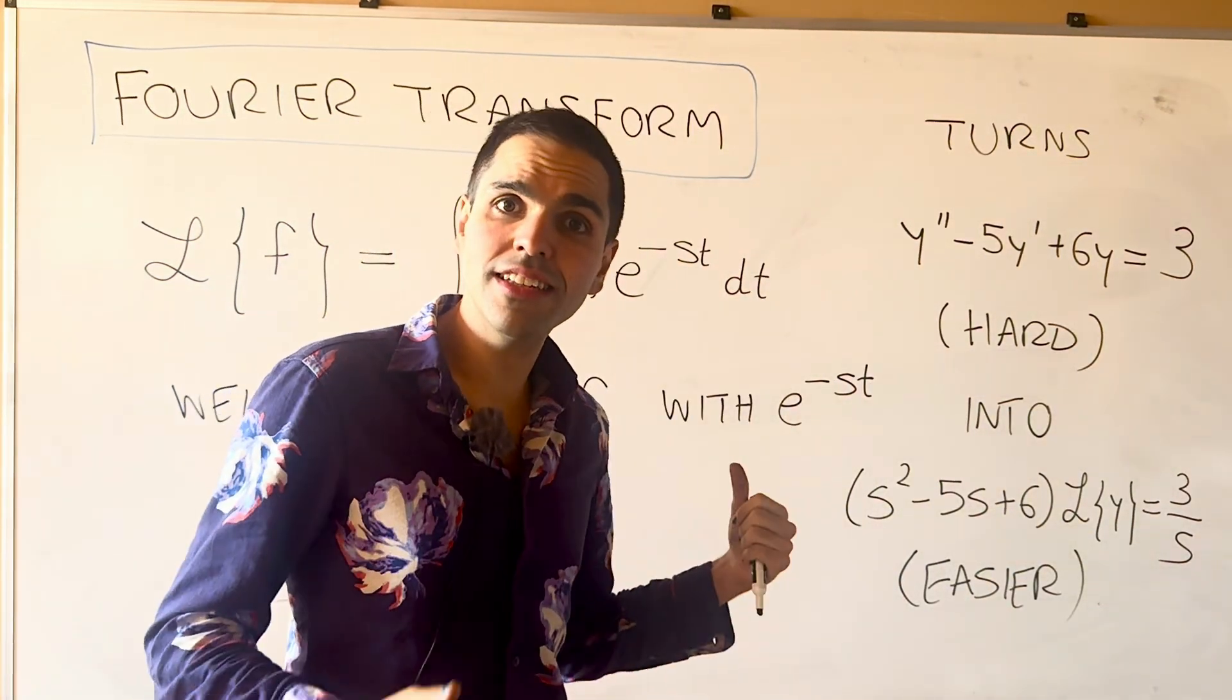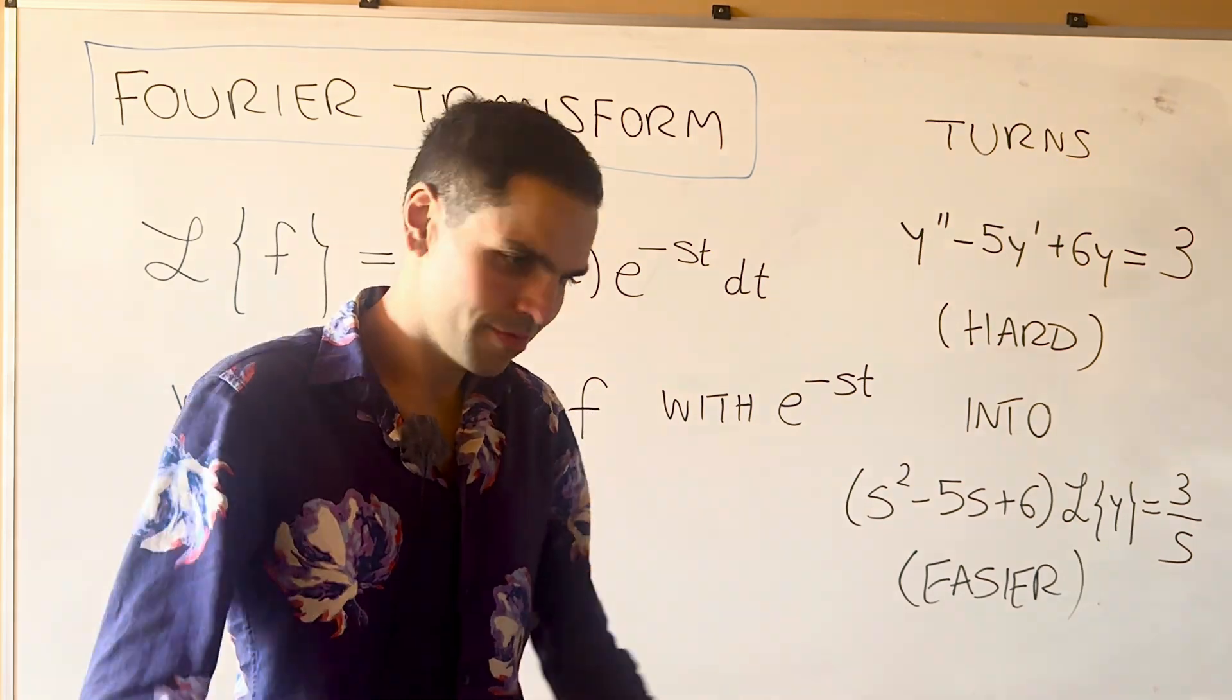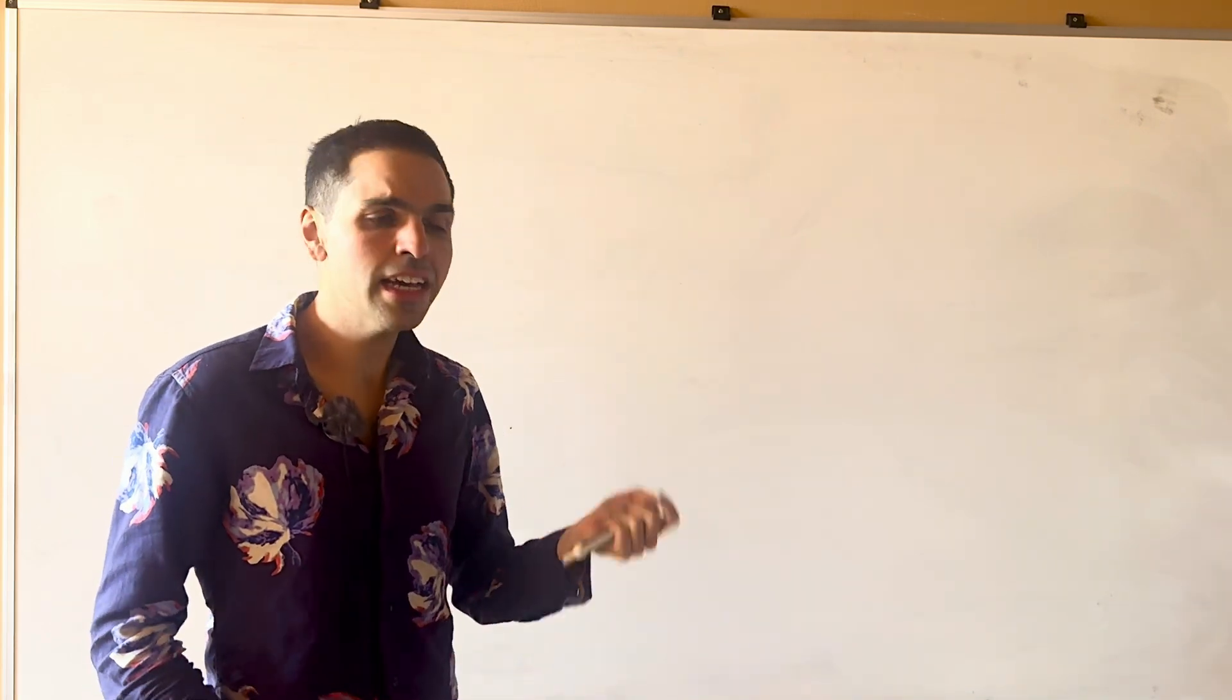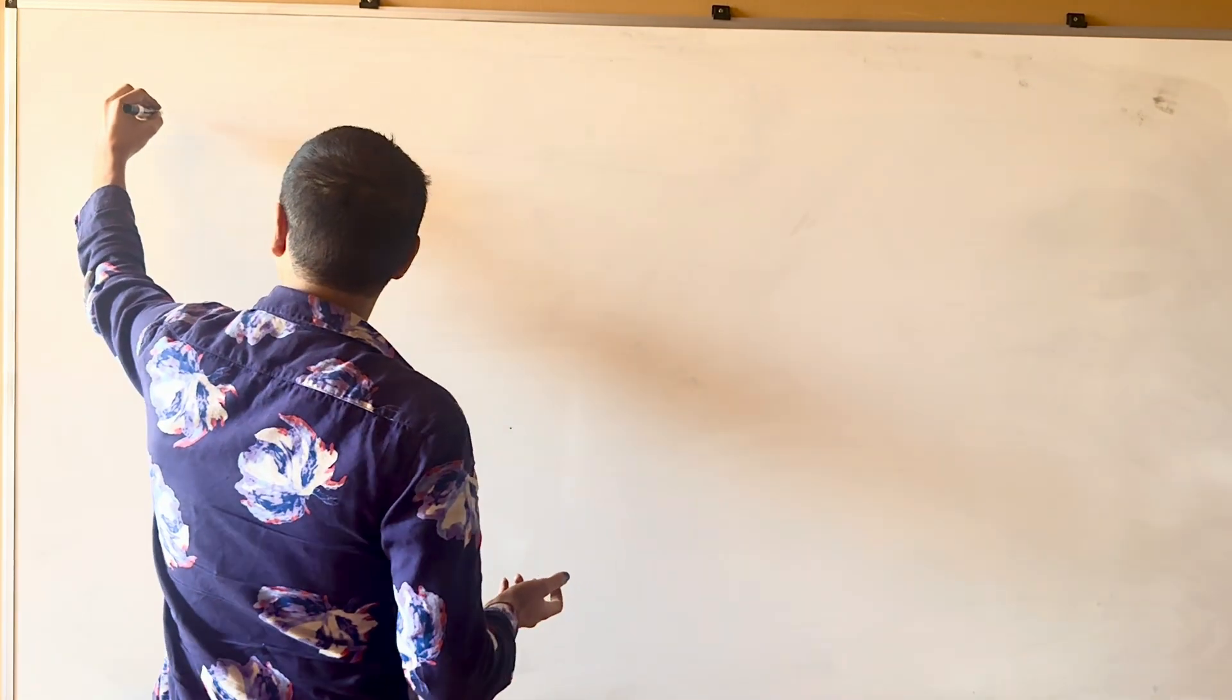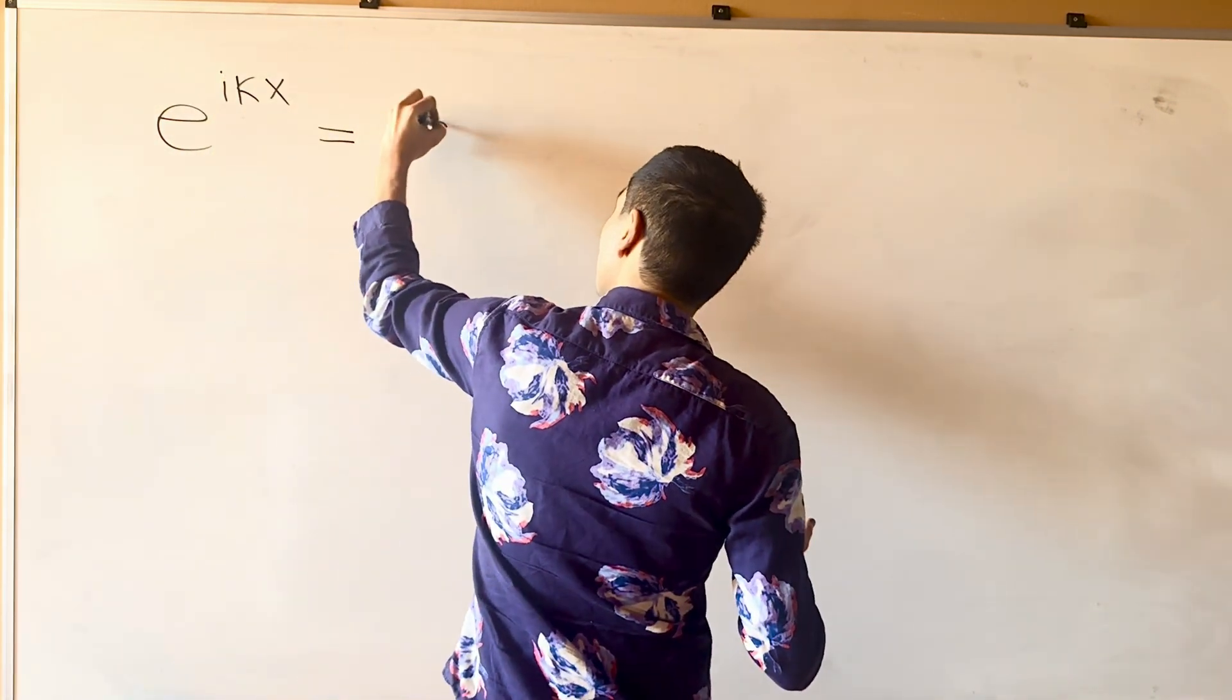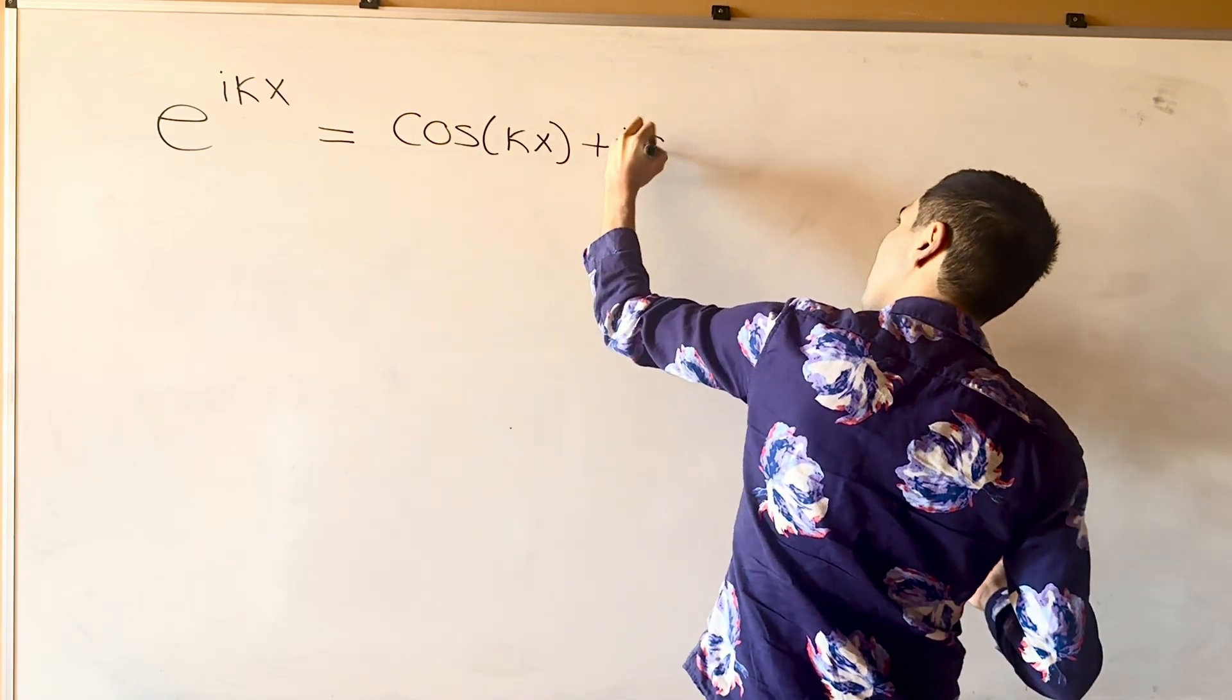And, it turns out, the Fourier Transform is the same thing, but for more complicated functions. Because, all the Fourier Transform is, it's the same thing, except we replace the e minus st with squiggly functions, e to the i kappa x, which is just cosine of kappa x plus i sine of kappa x.